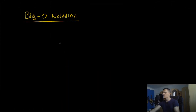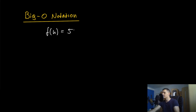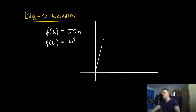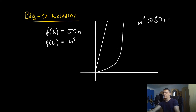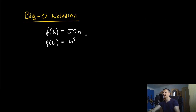Big O notation is essentially just a mathematical way of writing down which function is limiting another function. Imagine you have the function f(n) = 50n and g(n) = n². If we use a coordinate system to plot these two functions, you have a pretty steep linear function and then n². Since n² is growing way faster than n, there will be some point where n² is going to intersect with 50n, and then n² is going to dominate 50n.